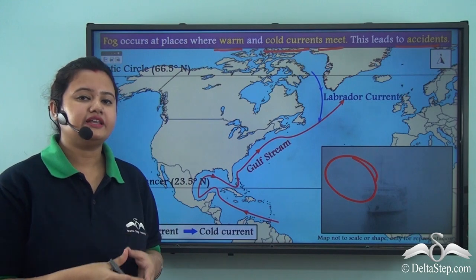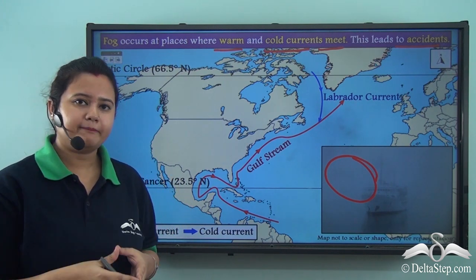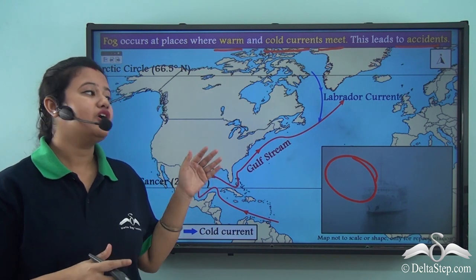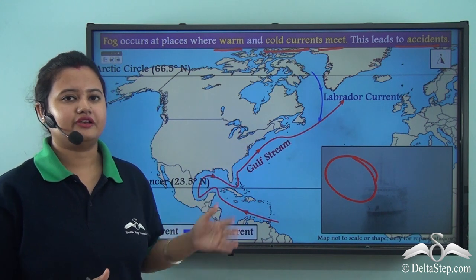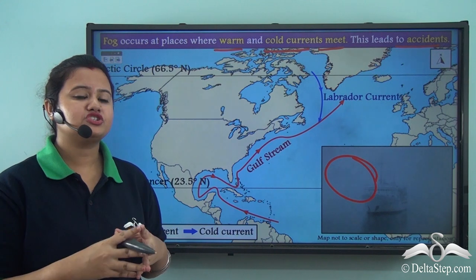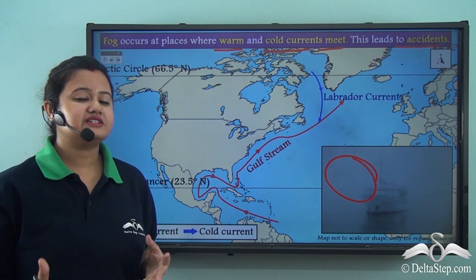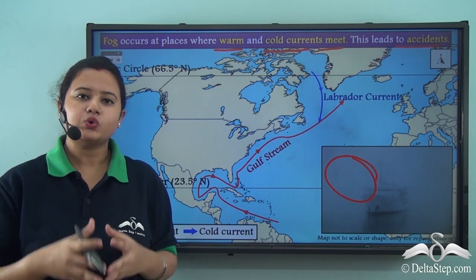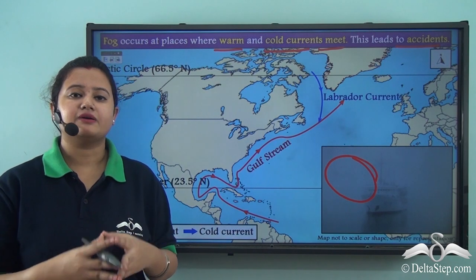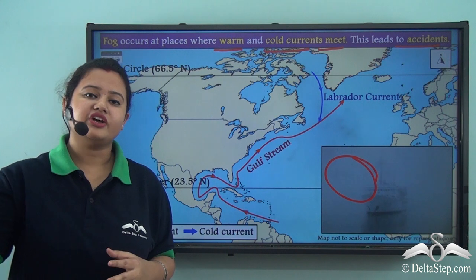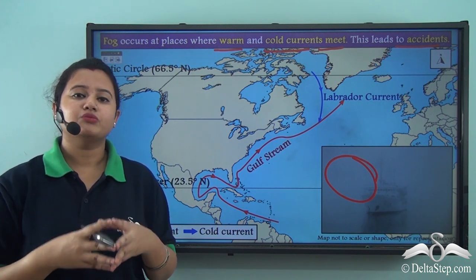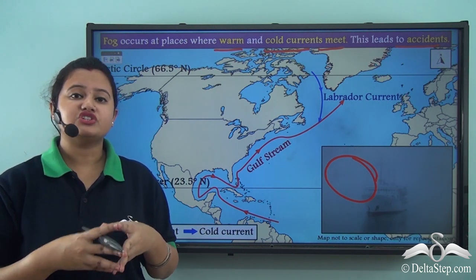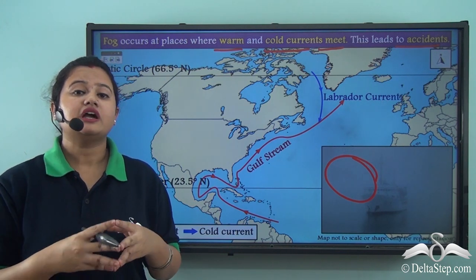Ocean currents have both favourable and undesirable impacts. A favourable impact is that a rich fishing ground develops at the confluence of warm and cold ocean currents, while an undesirable impact is the formation of dense fog that leads to fatal accidents. To summarize today's lesson: waves refer to the alternate rise and fall of surface water and are mostly driven by winds. Apart from wind, earthquakes are also an important factor in the formation of waves.